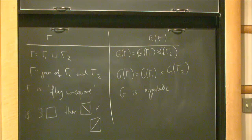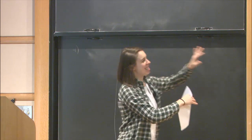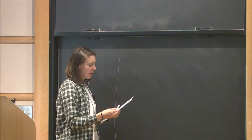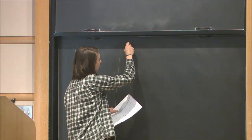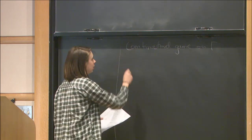Now forget about groups for a moment. I'm going to tell you about this combinatorial game that's played on the graph gamma. We have a connected graph, and we want a starting state and a coloring.